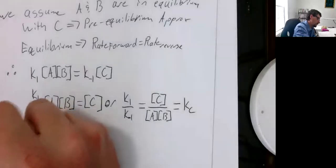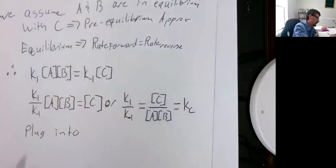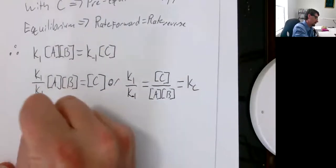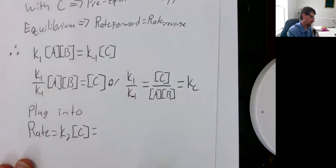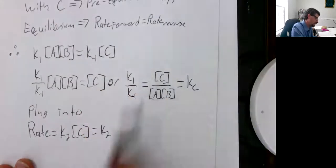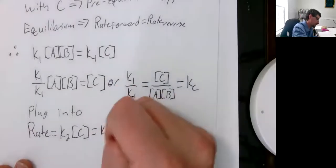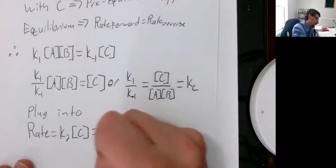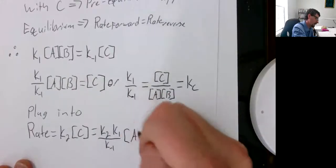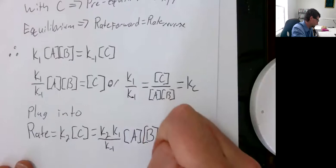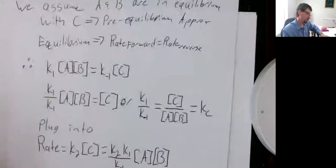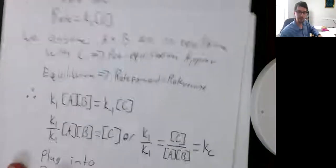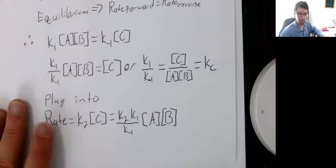So now what can we do with that? We plug into our rate expression. We've got rate is equal to K sub 2 times concentration of C. Let's plug those things in. We get K2 times K sub 1 over K negative 1 times A times B. Now we've ended up with two expressions. This is what we get with the pre-equilibrium approximation.